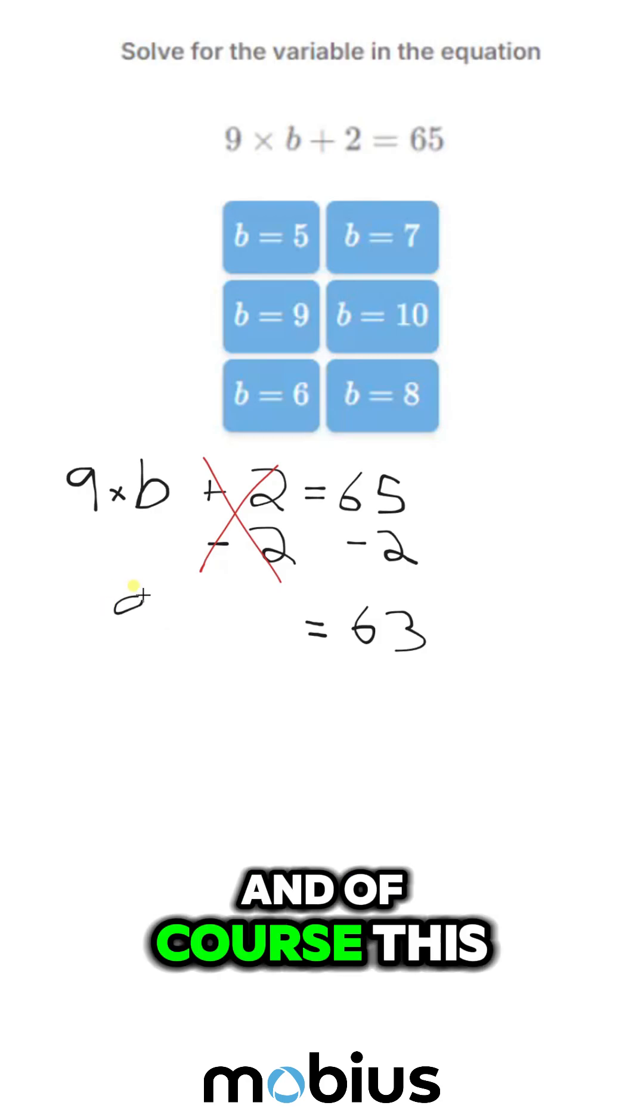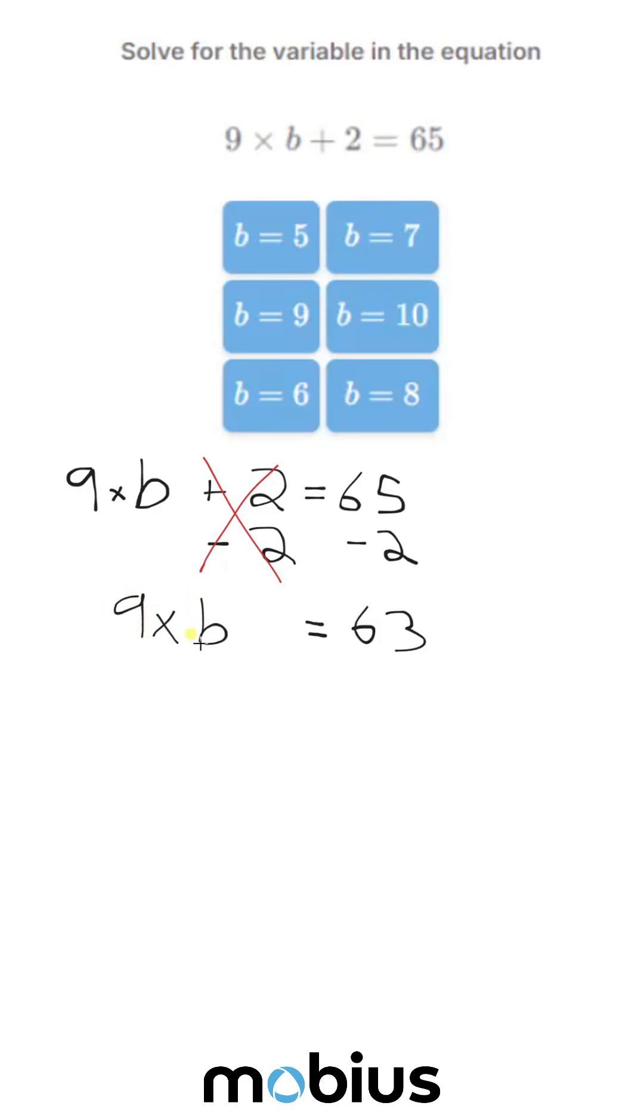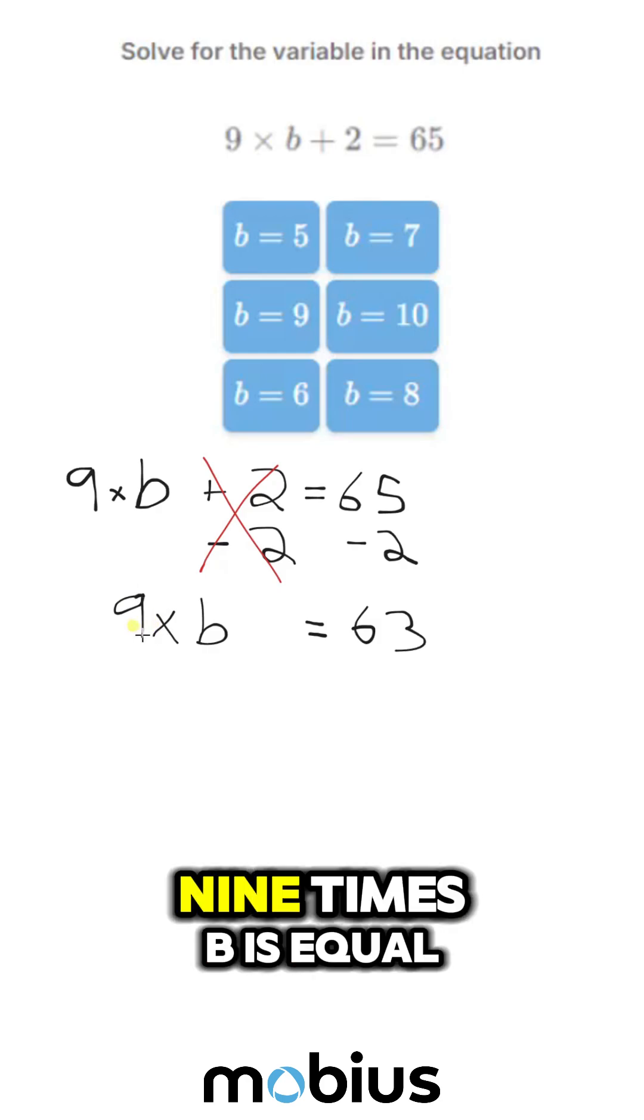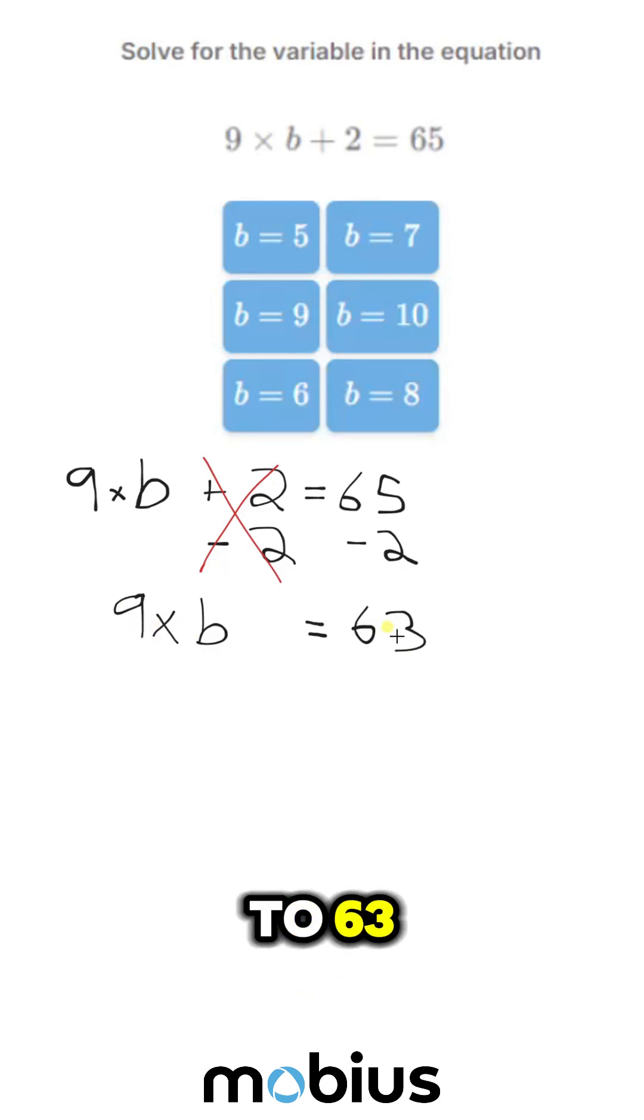And of course, this is just 9 times b. So now 9 times b is equal to 63.